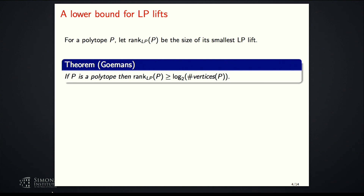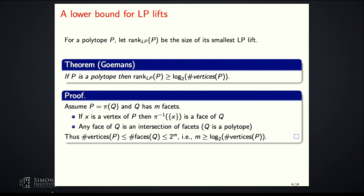The proof is very simple. Assume I can write P as the projection of a polyhedron Q with M facets. If I take a vertex of my polytope P and look at its pre-image in Q, that is a face of Q. Any face of Q is an intersection of facets, and since I have M facets, I can have at most 2^M such faces. So the number of vertices is at most 2^M, giving us this lower bound.